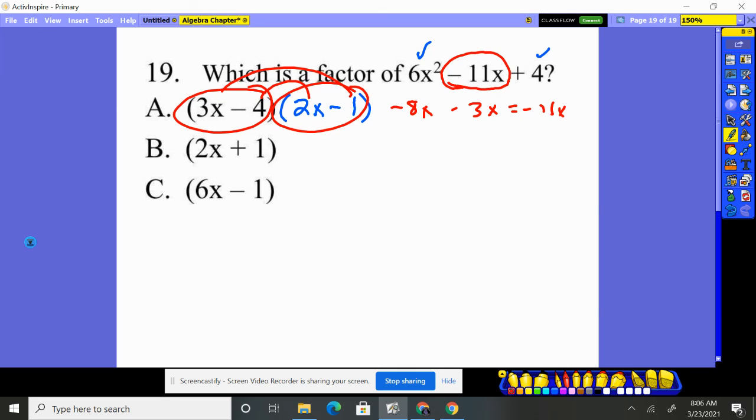So we know since those are the two factors of it, the others are not. So the choice for number 19 is A.